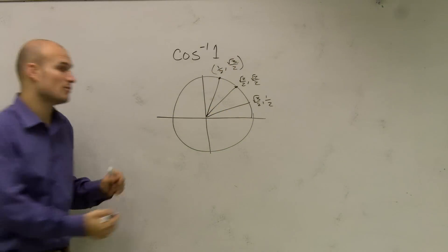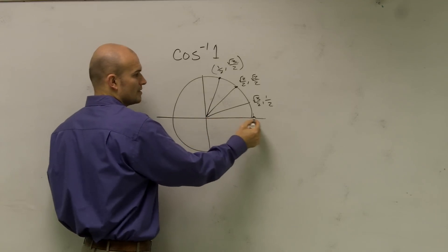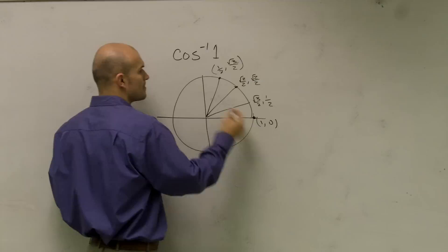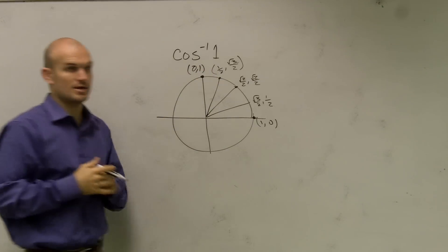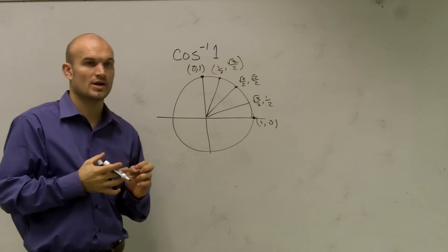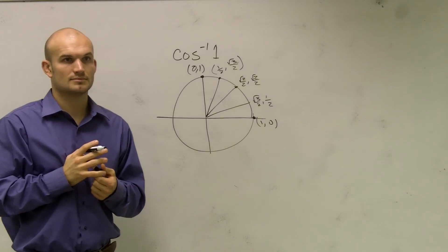There's also two other points that you need to remember. Remember the radius of our unit circle is at 1 comma 0, and then we have 0 comma 1, right? All right, you got that?